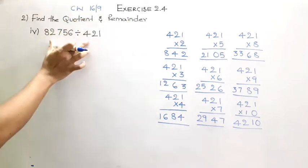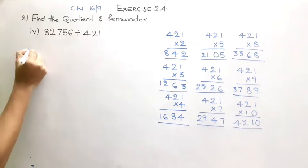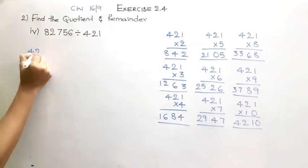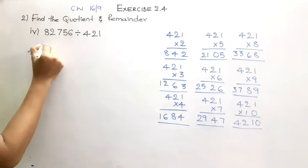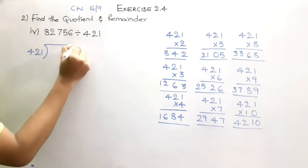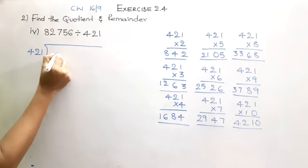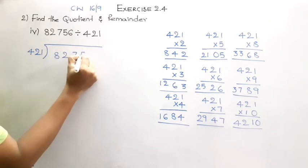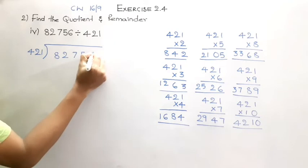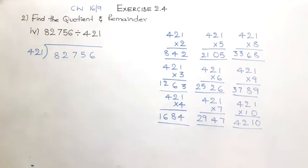Let us take the divisor as it is given: 421. So the divisor is 421 and the dividend is 82,756.